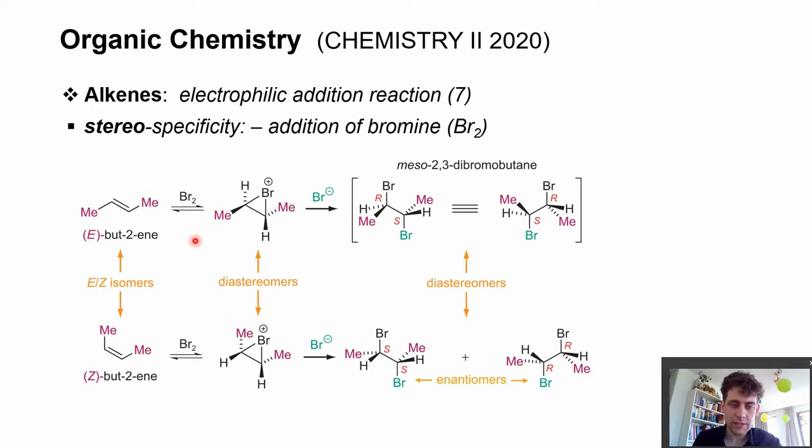If we start with an E-alkene, the two groups are of course in E or trans position to each other. After we have formed the intermediate by the approach of the bromine molecule from the top in this case, these two groups are still in this trans configuration to each other.